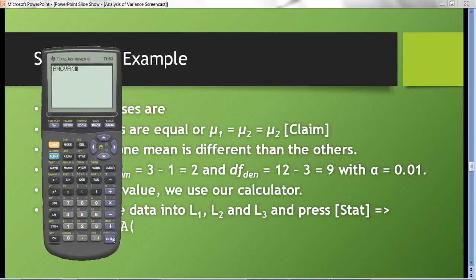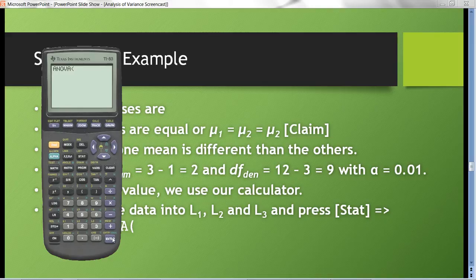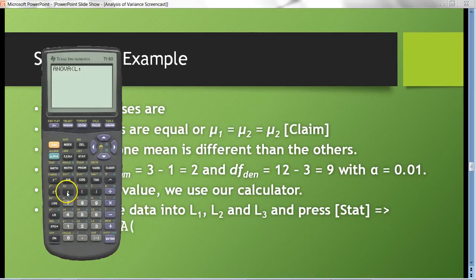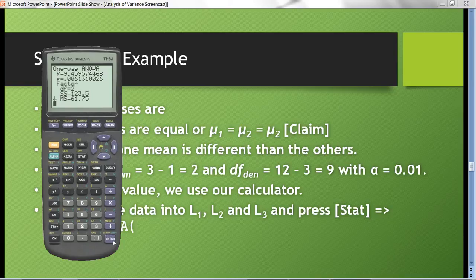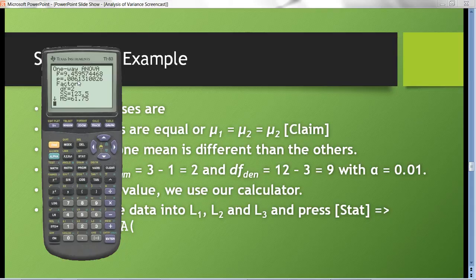Go ahead and hit enter. We want to enter the three lists in which the data are. They were in lists 1, 2, and 3, so I hit the second key, number 1, for list 1. Hit the comma, that's right above the 7. Second and L2, another comma. Then the second key and number 3 for list 3. Hit and close parentheses. To get the output, I'll just go ahead and hit the enter key. So the p-value is 0.006131.